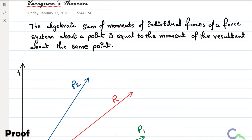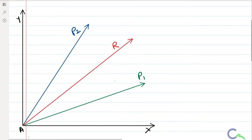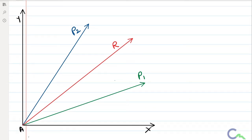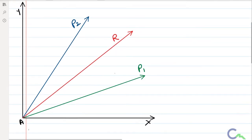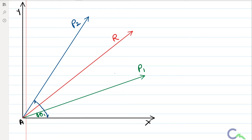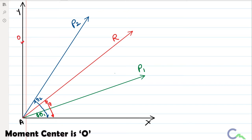To prove this theorem, I will make use of this figure. In this case, we have one force system where P1 and P2 are the two forces and R is the resultant of those two forces. I will assume theta1 is the angle made by P1 with respect to horizontal, theta2 is the angle made by P2 with respect to horizontal, and theta is the angle made by the resultant with respect to horizontal. I will consider moment center O on the y-axis.